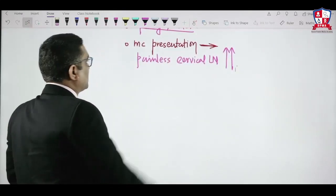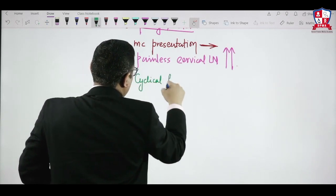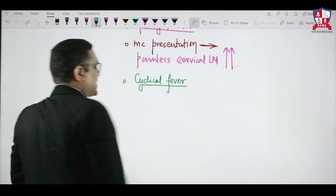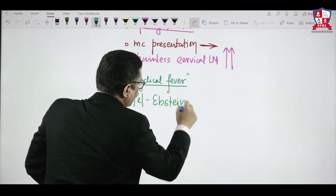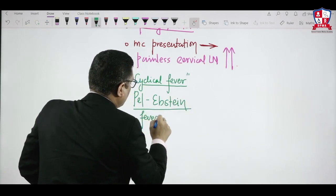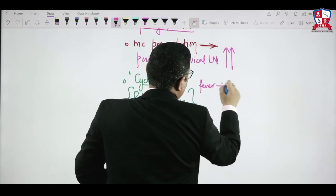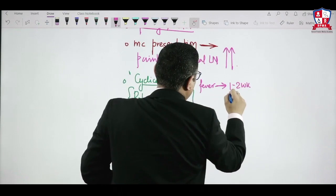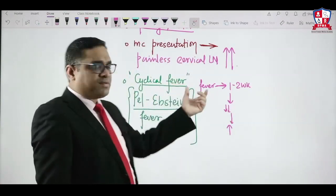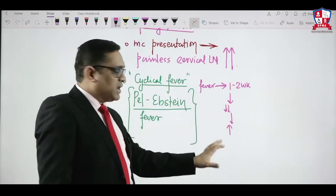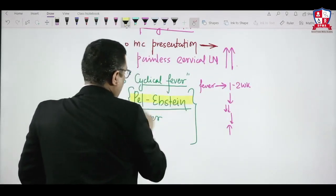Another characteristic feature of Hodgkin's lymphoma is cyclical fever, known as Pel-Epstein fever. This is seen in Hodgkin's lymphoma and may be asked in exams. The fever is present for 1 to 2 weeks, then comes down, and increases again in a cyclical pattern.